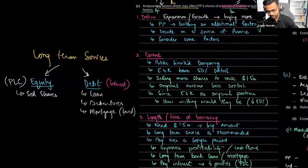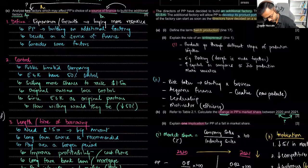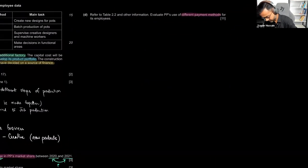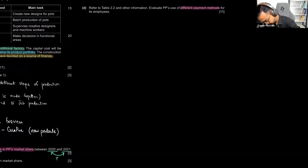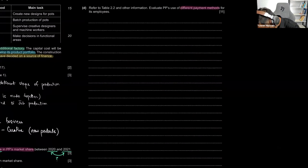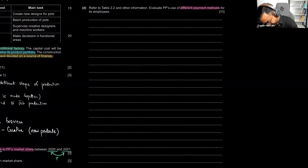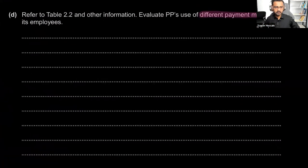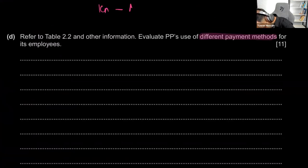Now Part D — an eleven-mark question. Whenever you have an eleven-mark question, you need to talk about all four elements: knowledge, application, analysis, and evaluation. The question asks us to refer to Table 2.2 and other information. Evaluate means we'll look at other factors with a two-sided answer — does it work, does it not work, and if not, what do you recommend?